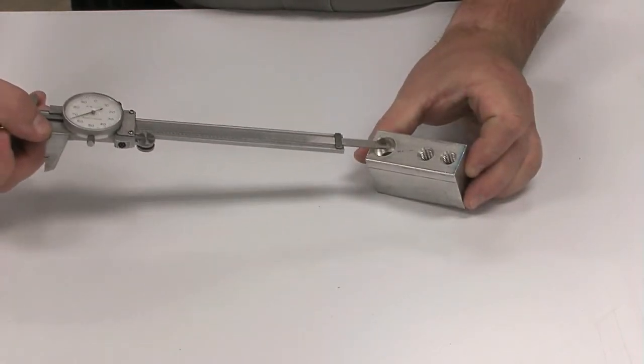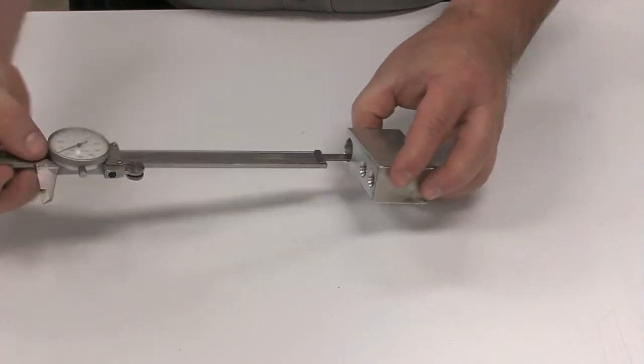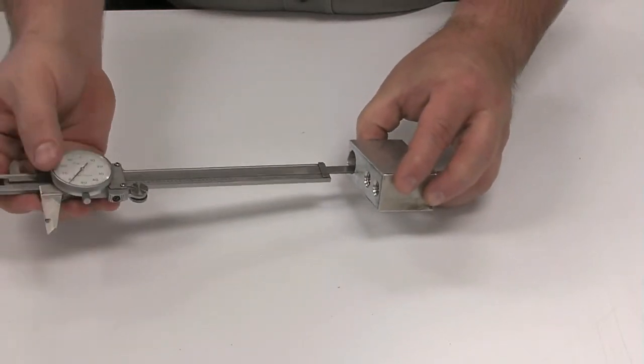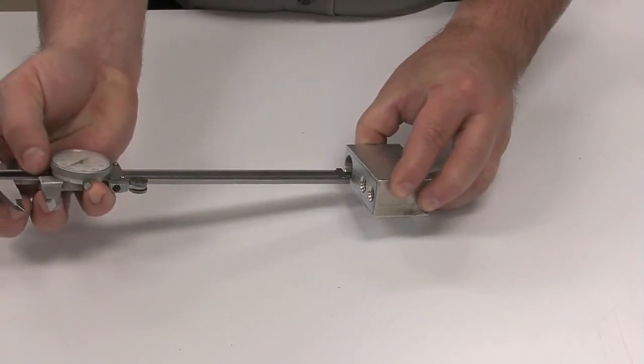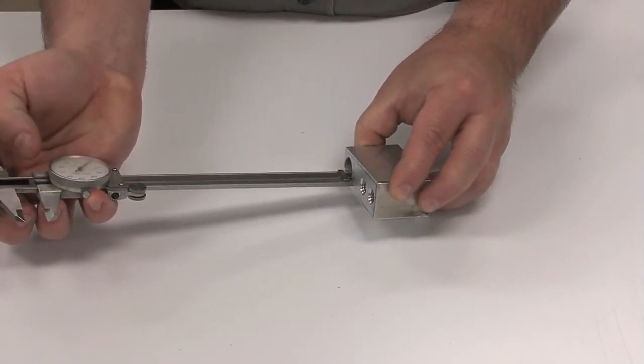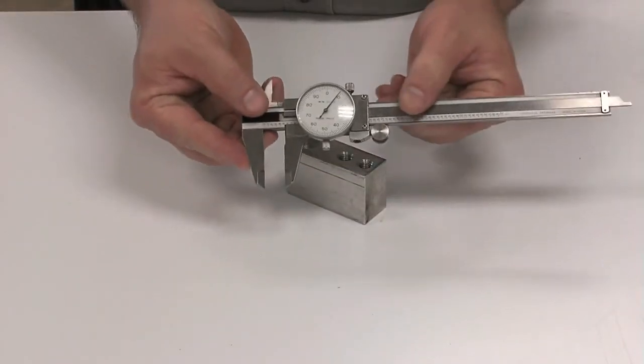This hole has a countersink area, so I can set this against the shoulder on the inside, then slide the shoulder down until it just touches and read the measurement off the dial indicator.